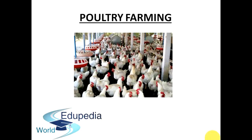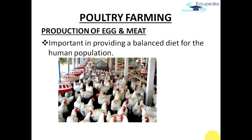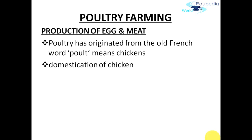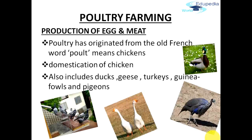Now that we have talked about cattle farming, let's also discuss poultry farming. Poultry farming is very important because it gives us a balanced diet. Poultry farming is generally involved in production of eggs, meat, and other products obtained from these birds. The word poultry has originated from the old French word 'poult', which means chicken or a domestic fowl. It is not limited to just chicken — it also includes ducks, geese, turkeys, guinea fowl, and pigeons.